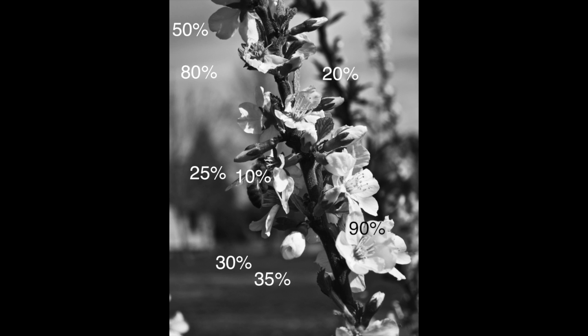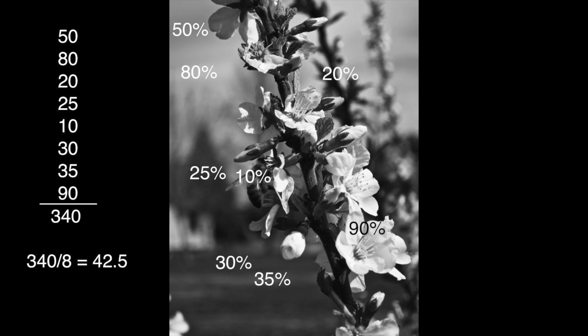On this photo here, I've marked some of the different brightness values for different areas. You'll notice this photo is in black and white because the camera meter does not see or care about color — it only cares about how bright or dark something is. The bee in this shot is about 10% bright, the petals on the flowers are about 90% bright, parts of the sky are at about 50%, the brighter areas of the sky at 80%, the trees at 25%, and parts of the grass at 30% and 35%. The camera meter measures the brightness for the entire scene, then takes all of those brightness values and averages them. Using the values I measured on this photo, we have eight values that total 340, and when we average that, we get 42.5%.